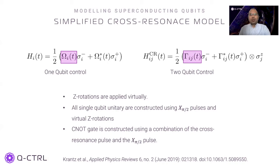Many superconducting qubit devices use the cross-resonance interaction to implement one and two qubit gates. The device control Hamiltonian can be broken down into two parts: the single qubit control and the two qubit control. We can manipulate these controls to implement various gates. In the cross-resonance model, all single qubit unitary gates can be created by combining the X90 pulse with Z-rotation. The X90 pulse rotates the state vector by 90 degrees along the x-axis on the Bloch sphere. Z-rotations rotate state vectors and combine their x and y components. While the single qubit Hamiltonian does not contain an easy term, virtual Z-rotations can be obtained by manipulating the x and y components of the control pulse omega. A two-qubit cross-resonance pulse, called CR90, can be combined with the X90 pulse and a virtual Z-rotation to create the CNOT gate.